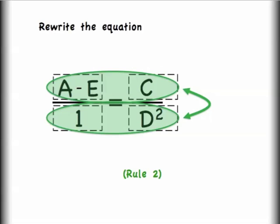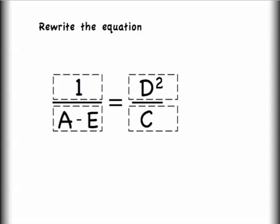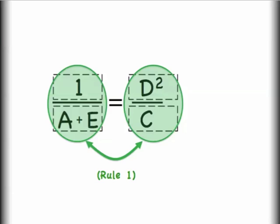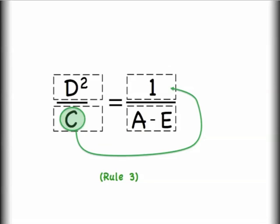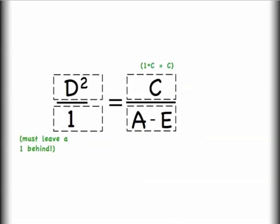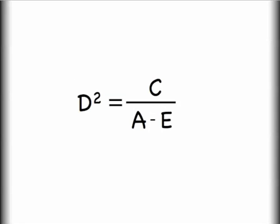Now that I have this as a starting place, I can apply some of my rules. First, I'm going to apply rule two and flip top to bottom both sides of the equation — I'm doing this so that I can get D into the numerator. Once I have this, I'm going to use rule one and flip from left to right both sides of the equation so that the variable I'm solving for is on the left-hand side. Now I'll use rule three so that I can move the C in the denominator on the left-hand side diagonally up to the top right, again leaving behind a one. I can simplify the left-hand side to show that D squared is equal to C divided by A minus E. Then I can square root both sides of the equation to get rid of the square on the left, but that leaves me with the square root on the right.